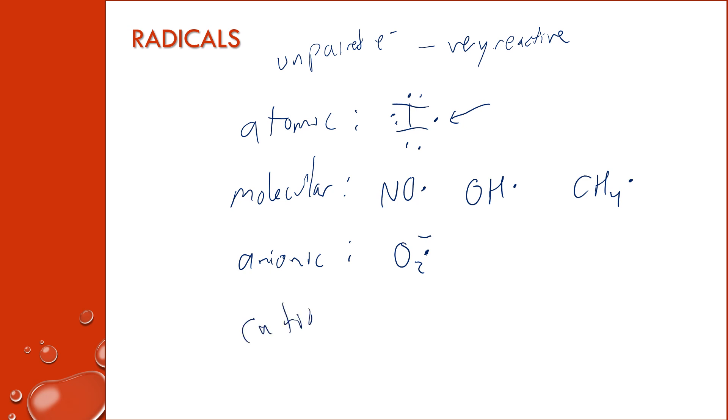They can also be in cationic forms, so they have positive charges. The best example I have of this are molecular ions, so something like C3H8.